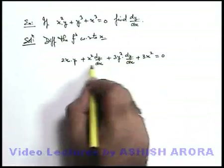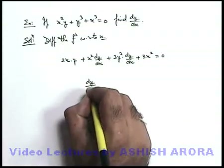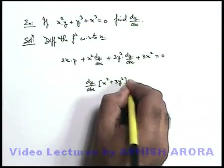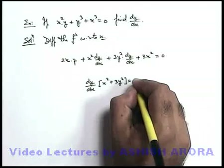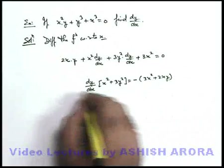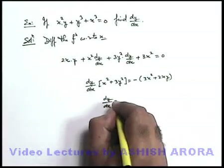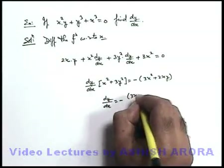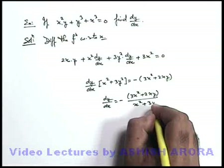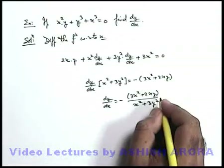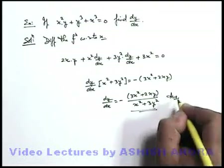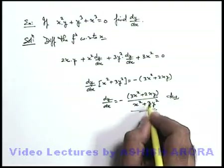Now we take dy/dx common in both terms, giving (x² + 3y²), and take the remaining terms to the right side of equality, which gives negative of (3x² + 2xy). So from here we get the value of dy/dx as negative of (3x² + 2xy) over (x² + 3y²). In implicit differentiation, the result contains terms of both variables x as well as y.